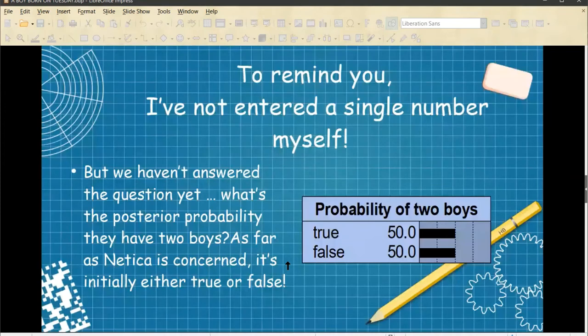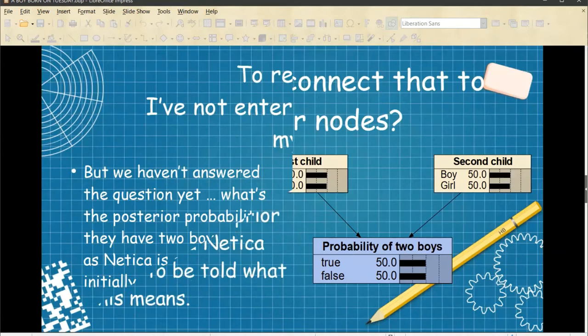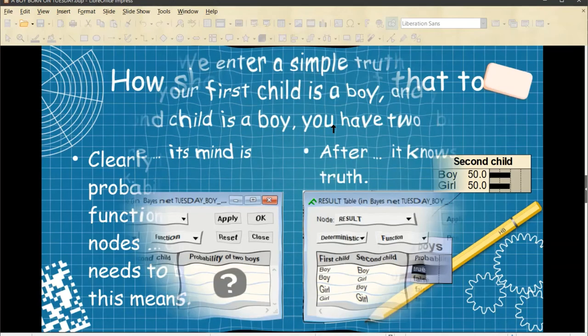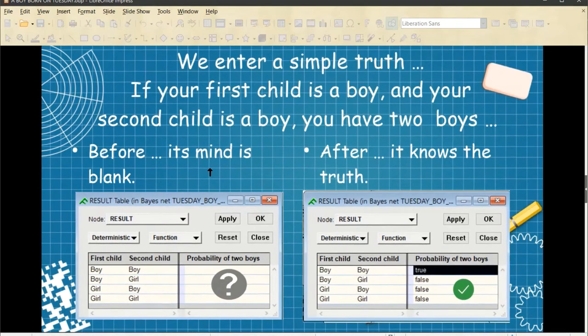To remind you, I've not entered a single number myself. But we haven't answered the question yet. What is the posterior probability that they have two boys? Again, as far as Nereka is concerned, the Bayesian calculator, it's initially either true or false. We need, again, to get into its brain. So how shall we connect that to our prior nodes? Well, clearly, the probability is in function of the two prior nodes. And Nereka needs to be told what this means. Once again, we get into its brain. We enter a simple truth. If your first child is a boy, and your second child is a boy, then you have two boys.